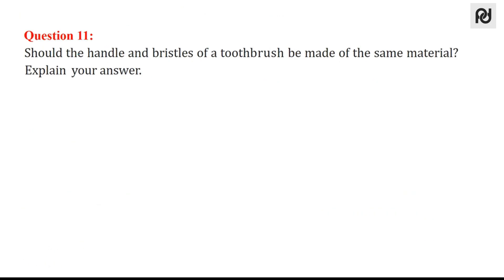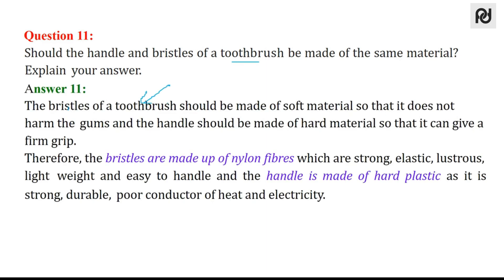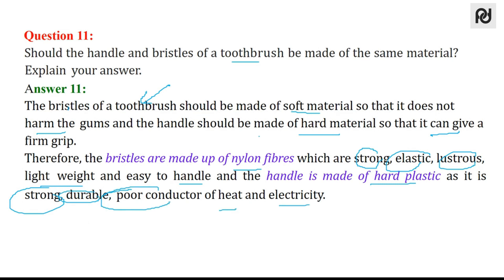Question 11: should the handle and bristles of a toothbrush be made of the same material? The bristles should be made of soft material so that they do not harm the gums, while the handle should be made of hard material to give a firm grip. Nylon — being strong, elastic, lustrous, light in weight, and easy to handle — is used for making the bristles. Hard plastic, being strong, durable, and a poor conductor of heat and electricity, is used for the handle.